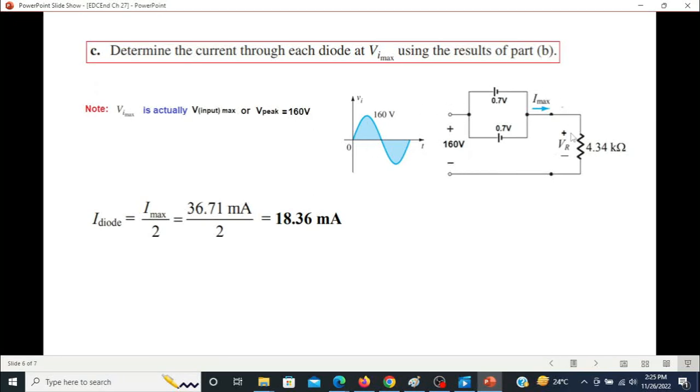For this circuit we had already calculated I max, the total current, which was 36.7 milliampere. Now in each diode this current will be divided into two parts equally, so we simply divide by 2 to get the diode current. So 36.71 divided by 2 is 18.36 milliampere.